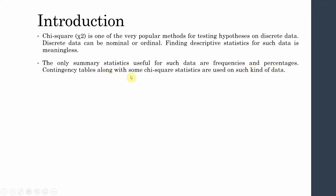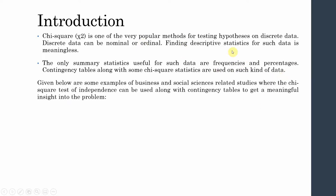The only summary statistics useful for such data are frequencies and percentages. Contingency tables along with chi-square statistics are useful for this kind of data. You cannot take the mean of such data — that would be totally meaningless. What we prefer for nominal or ordinal data is frequency and percentages: how frequent is a value in the dataset and what is the percentage of that frequency.